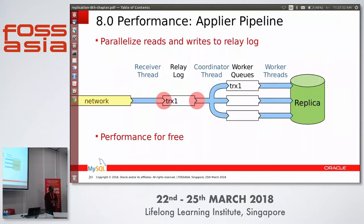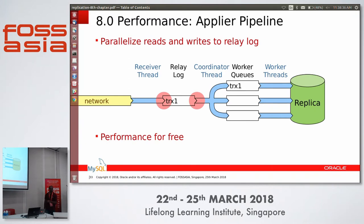Another performance improvement: the receiver thread writes to the relay log file, and the coordinator thread also reads from the same file, causing a lot of contention with log-related issues reducing performance. We made significant code improvements there, which give a huge performance difference when upgrading from 5.7 to 8.0. You don't have to set any variables — it's enabled by default.